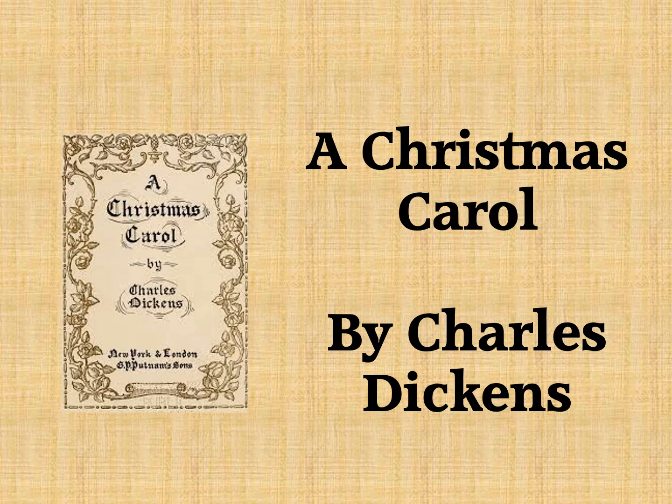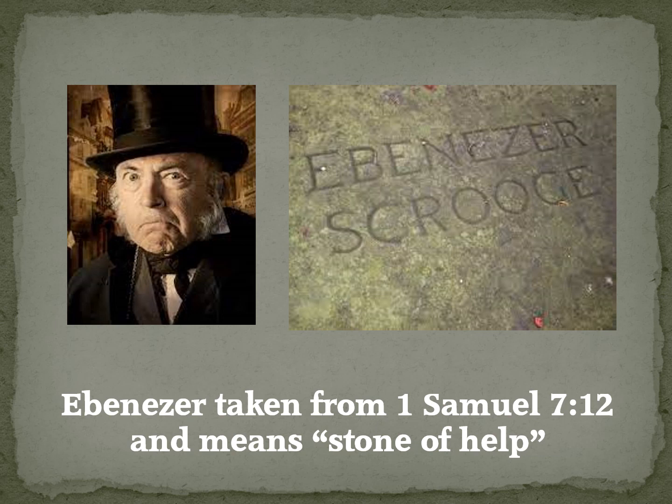A Christmas Carol by Charles Dickens is a beloved book, play, and movie, especially at Christmas time. The main character, Ebenezer Scrooge, has a first name straight from 1 Samuel 7:12. In this verse, the prophet Samuel commemorates God's intervention when the Israelites are being attacked by the Philistines. They erect a stone called Ebenezer, meaning 'stone of help.'